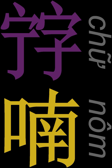Chữ Nôm, also called Nan IPA or Chữ Nam, literally meaning 'Southern Characters,' and in earlier times also called Quốc Âm or Chữ Nôm, is a logographic writing system formerly used to write the Vietnamese language. It used the standard set of classical Chinese characters to represent Sino-Vietnamese vocabulary and some native Vietnamese words, while new characters were created on the Chinese model to represent other words.